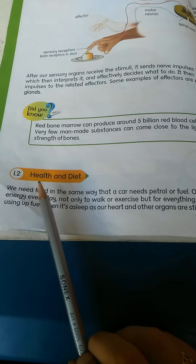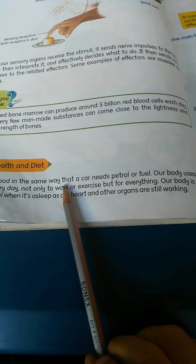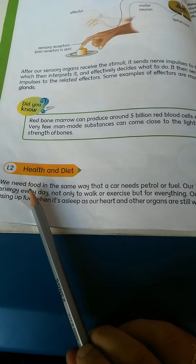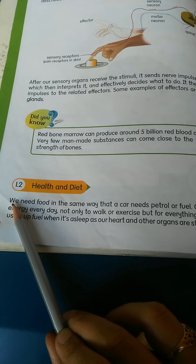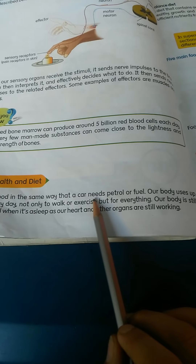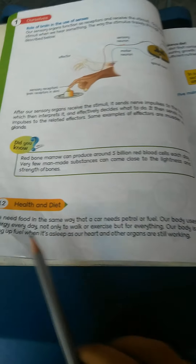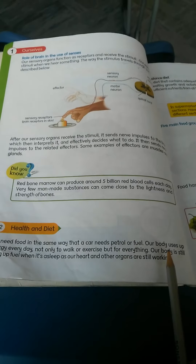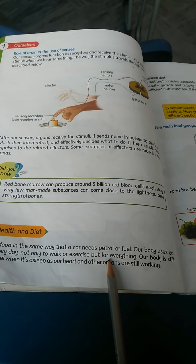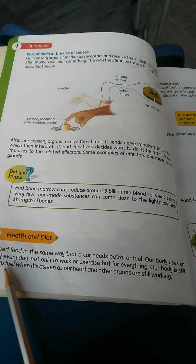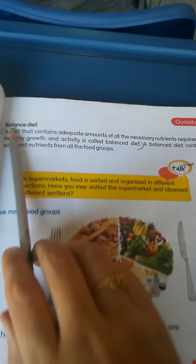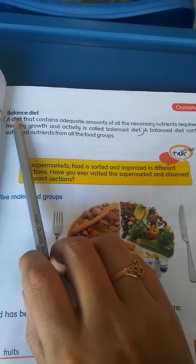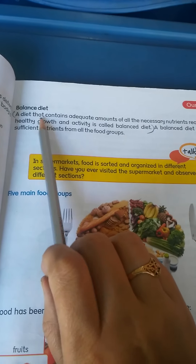Now we move to our next topic: health and diet. We need food in the same way that a car needs petrol. To grow and to grow healthy, we should eat healthy food. Our body uses up energy every day — not only to walk or exercise, but for everything. Even when asleep, our heart and other organs are still working, so food is very important.